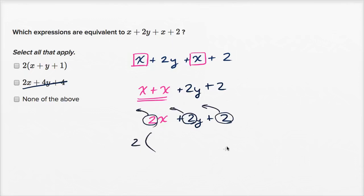So this is going to be 2 times x. I'll do the x in that same magenta color. 2 times x plus, you have just a y left when you factor out the two. And then if you factor out a two here, you're just going to have a one left. So 2 times x plus y plus one.